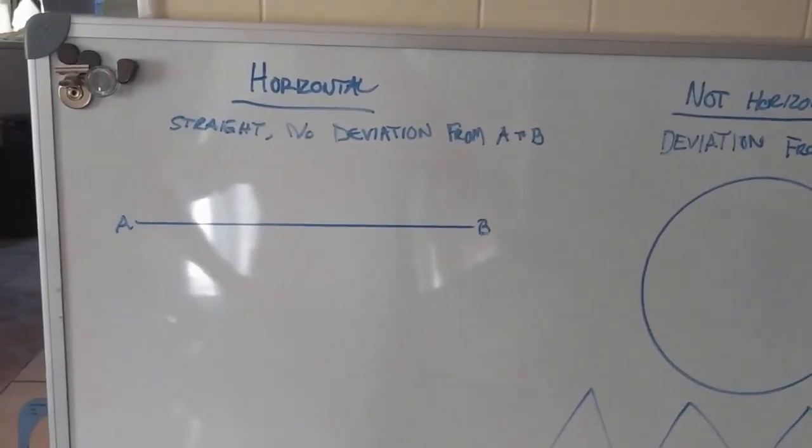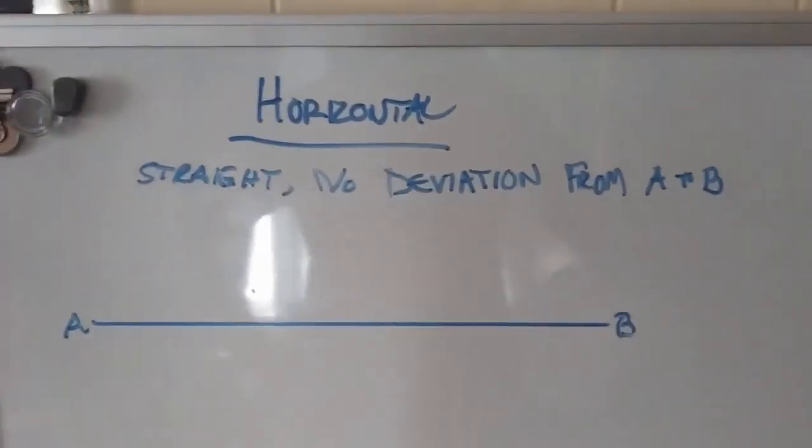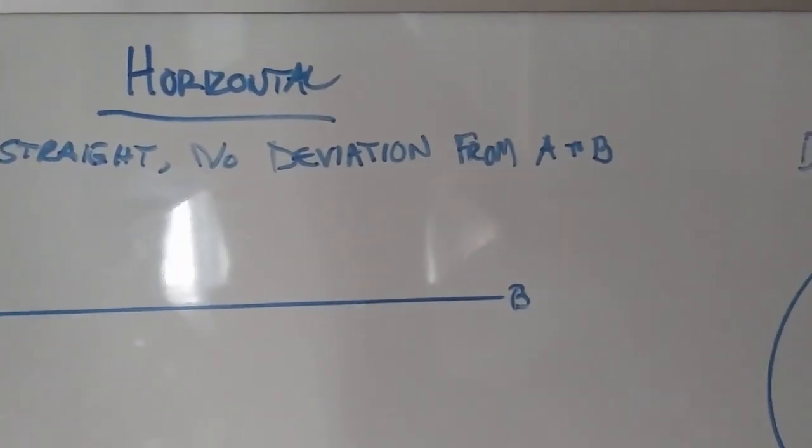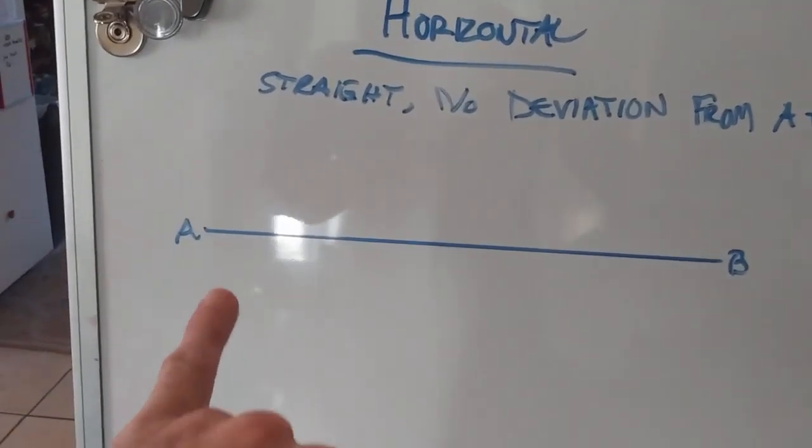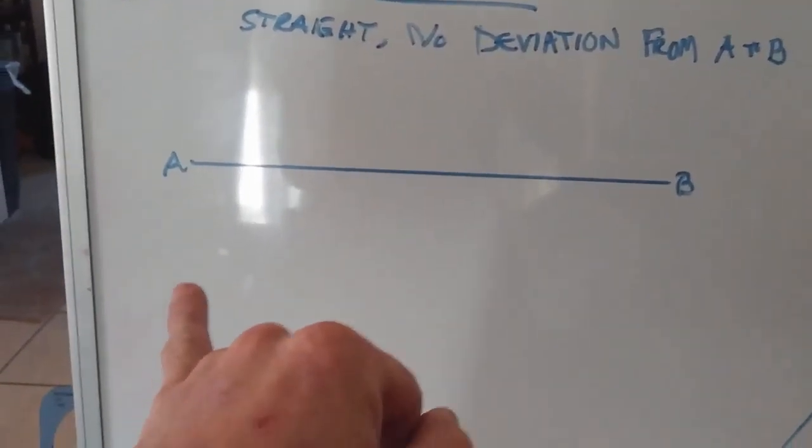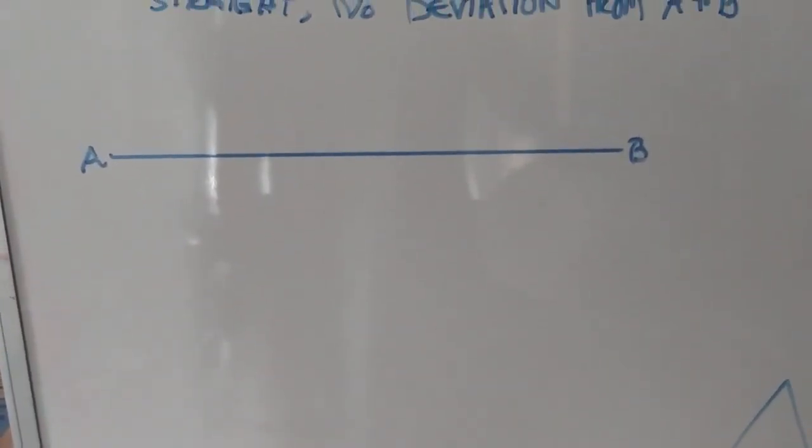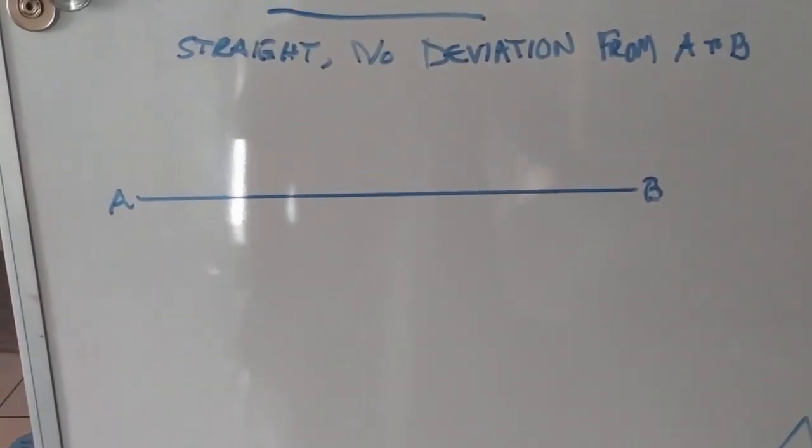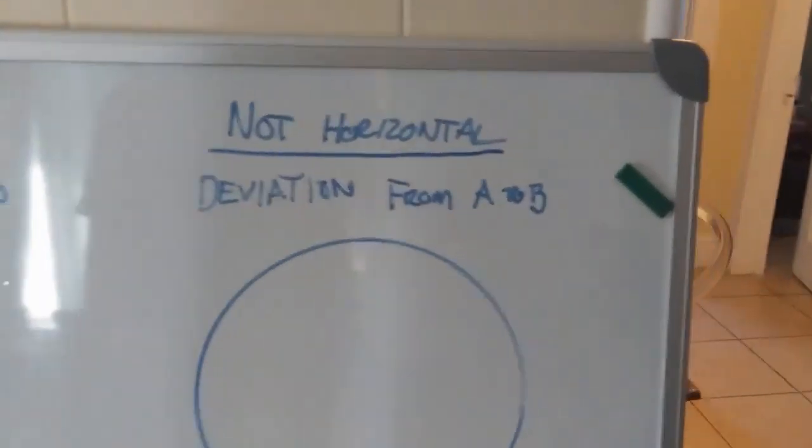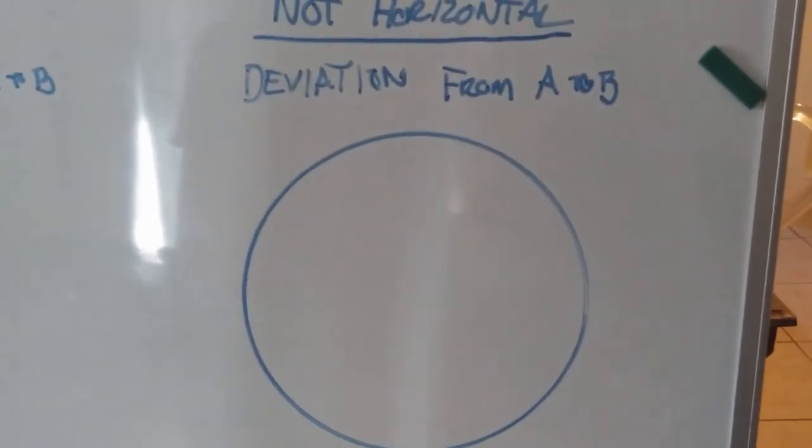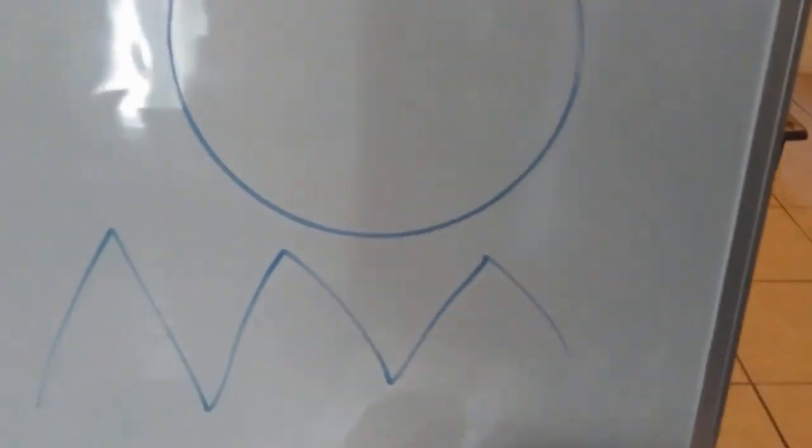Seems like the globetard doesn't understand what horizontal means: straight, no deviation from A to B. No deviation of elevation of the line from A to B, not elevation from the ground to your line. The line itself has no deviation of elevation. This is not horizontal. There is deviation from A to B and it's not straight.